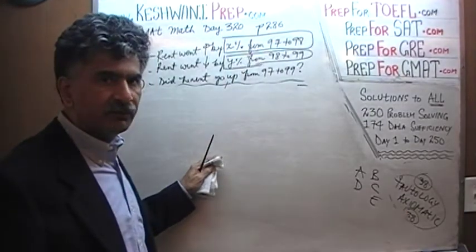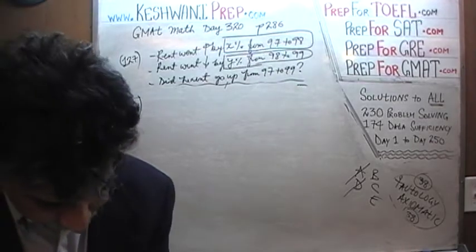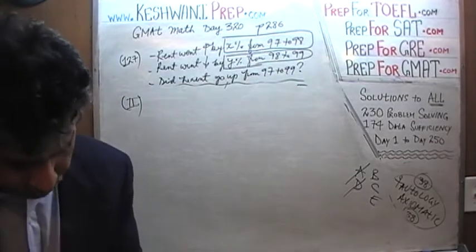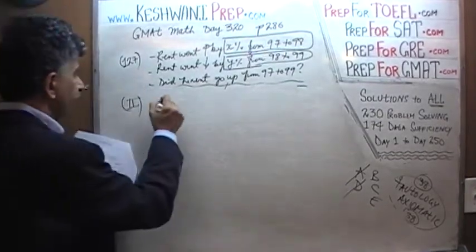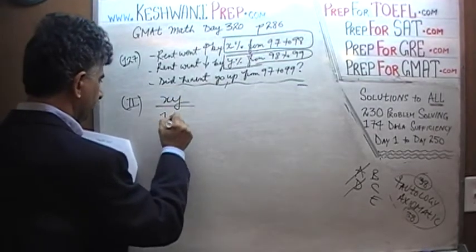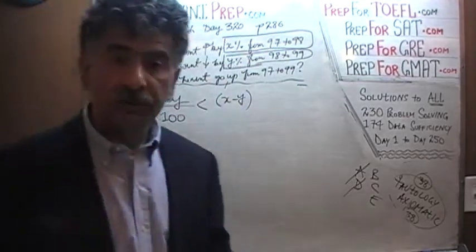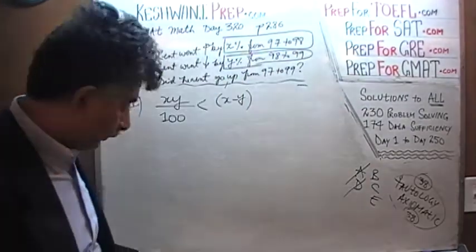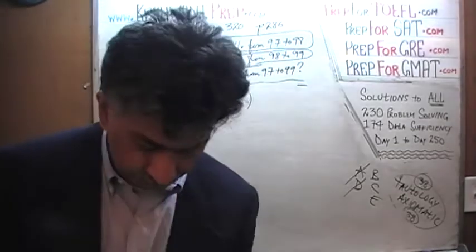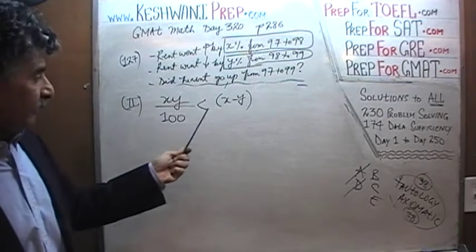The first statement was not enough — that rules out A and D. In the second statement they tell us that X times Y over 100 is less than X minus Y. X·Y/100 < X − Y. To which one would say: what the hell are we supposed to do with this? This is a pretty ugly-looking algebraic statement.